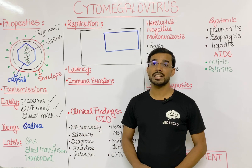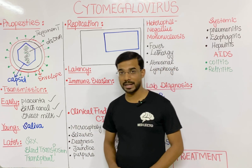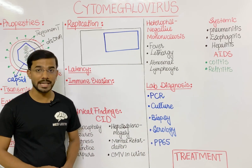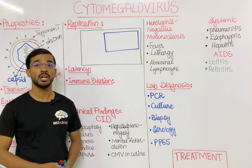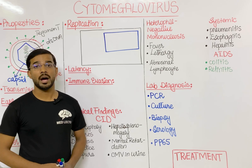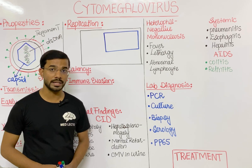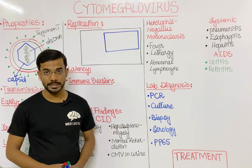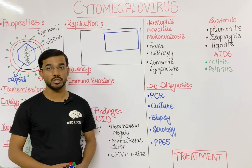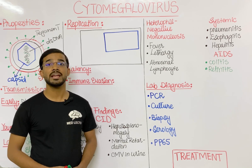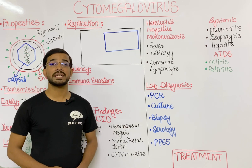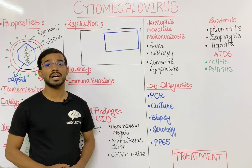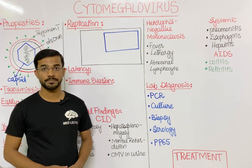Cytomegalovirus can also be transmitted through organ transplantation. If we look at the replication — how cytomegalovirus replicates in the cell — you should know the general steps of viral replication. First, the virus makes early proteins; after that, replication of the genomic material occurs; then the virus makes late proteins. Early proteins are basically enzymes helpful in replicating the genomic material, and late proteins are structural proteins like the capsid.